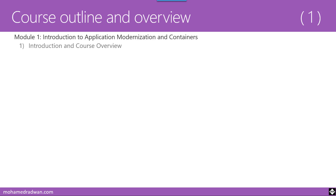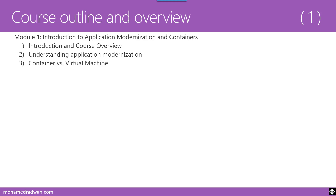In Module One, Introduction to Application Modernization and Containers, the first lesson is Introduction and Course Overview — the current lesson — explaining everything about the course scope and modules. Lesson Two covers Understanding Application Modernization: what it means, the steps and process to modernize applications, and why it's important. Lesson Three covers Containers vs. Virtual Machines. Lesson Four is Introduction to Kubernetes and Container Orchestration, providing an overview of Kubernetes and why container orchestration is needed.